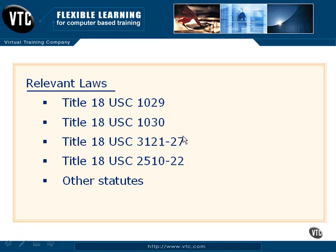USC 3121 through 3127 is called the Pen Registers and Trap and Trace. Basically, this says that you can interact with anything except for the contents of communication. What that really means is that you can be aware that a communication took place, be aware of the devices and addresses associated with that communication, but you're not authorized to access the contents of that communication. For example, in a basic TCP/IP communication, I can know the IP address of the sender and receiver, what operating systems are running, when the transaction happened, the size, and what protocol was used. But once I delve into the contents of that transaction, I'm violating USC 3121 through 3127.